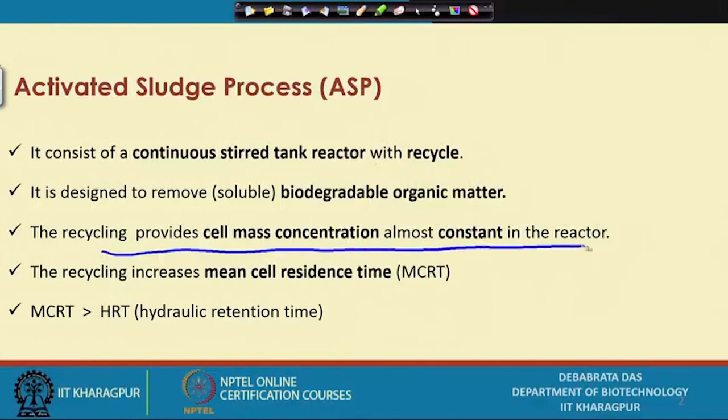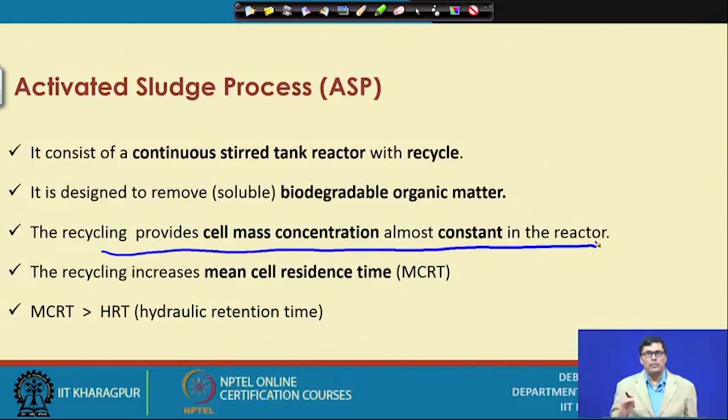In the biological process, if there is any soluble organics present in the wastewater, bacteria can easily utilize this organic matter for growth and multiplication. The soluble organics are converted into insoluble biomass. This insoluble biomass can be easily separated out — if you separate it out, you will find a clear liquid. That is why the activated sludge process is largely used for wastewater treatment. The recycling provides an almost constant cell mass concentration in the reactor, and the main purpose of recycling is to maintain uniform cell mass concentration so the rate of reaction in the reactor remains constant.